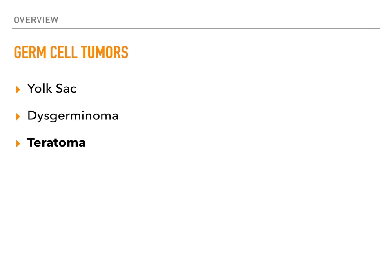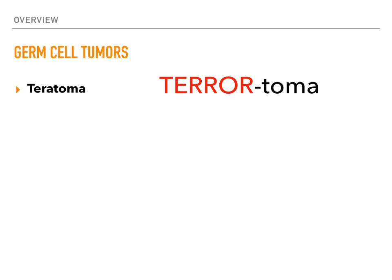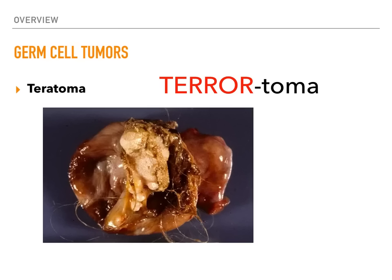The final type of germ cell tumor is the teratoma. The teratoma has been the easiest tumor to remember because it has the most memorable appearance — think 'teratoma' because it looks terrorizing. A teratoma can have hair, bone, teeth, and high-yield to know: it can have active thyroid tissue. Here's a gross image — if you see anything that looks monstrous like this, it's a teratoma. Those are our three different types of germ cell tumors.